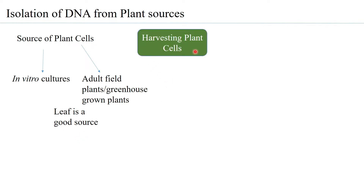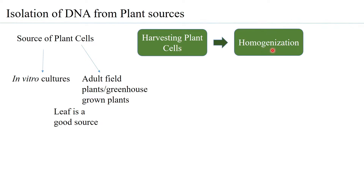The first step is generally harvesting the plant cells. If grown in vitro, culture growth and then harvesting is required; if taken directly from the field, one just processes the plant part. Homogenization is needed because cells adhere to each other through the middle lamellae, and obtaining single cells makes it easier to disrupt the cell wall to get the cell extract.